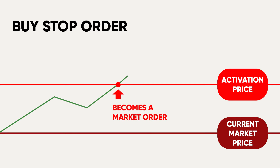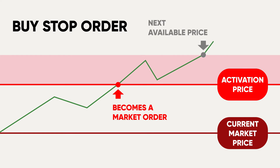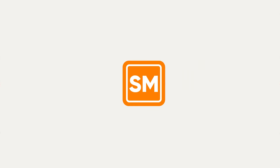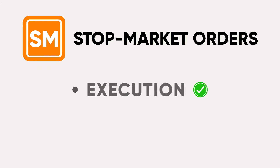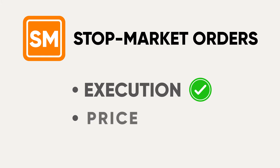Remember how we said that this type of order is sometimes also called a stop market order? And remember how market orders are set to be executed at the next available price? The next available price can differ significantly from the activation price. Put simply, stop market orders guarantee the execution, but not the price.